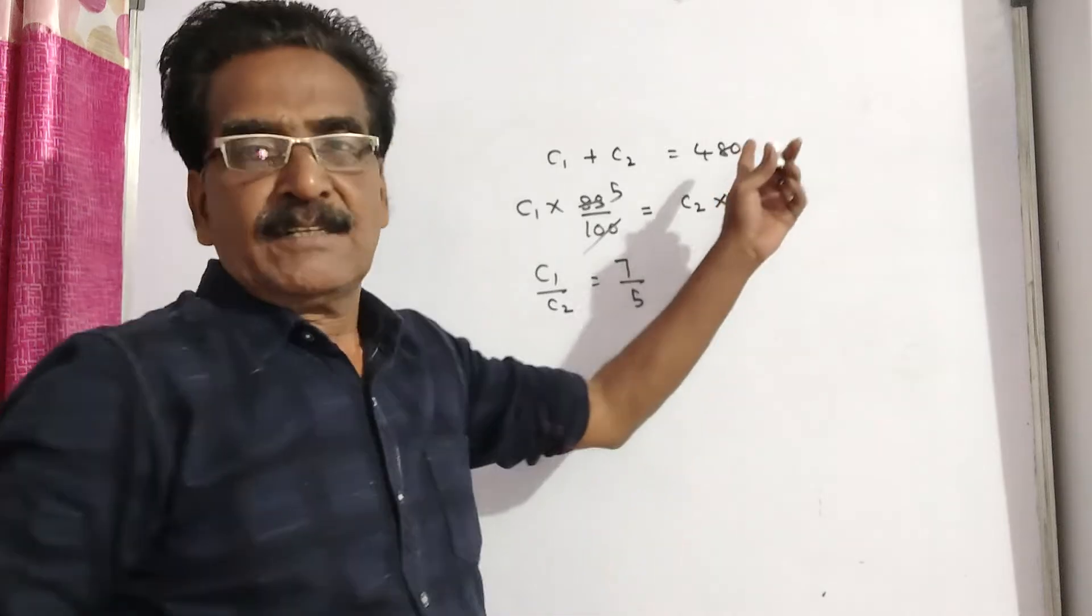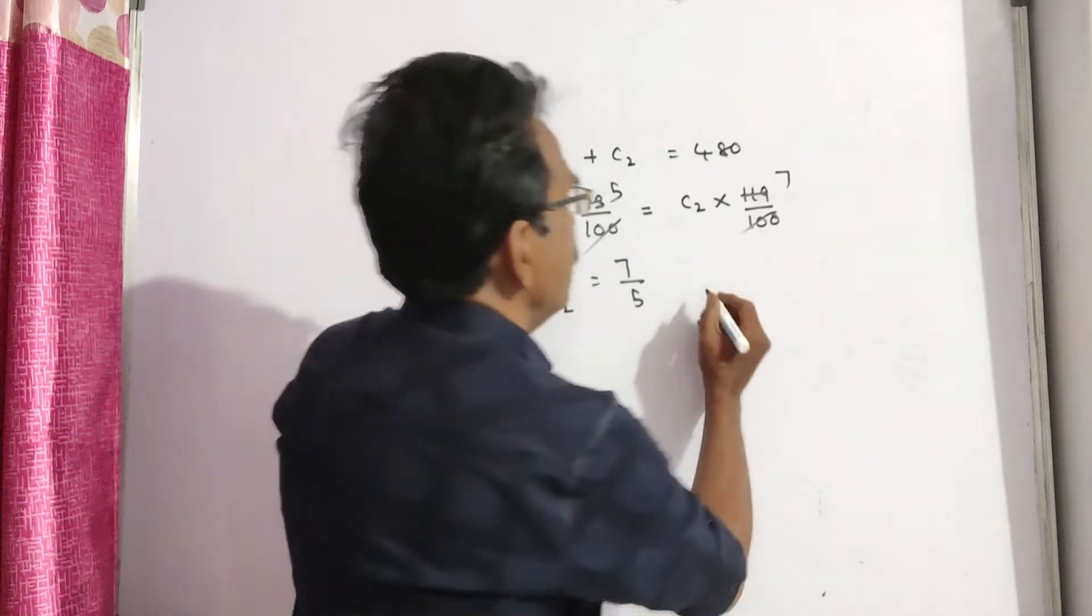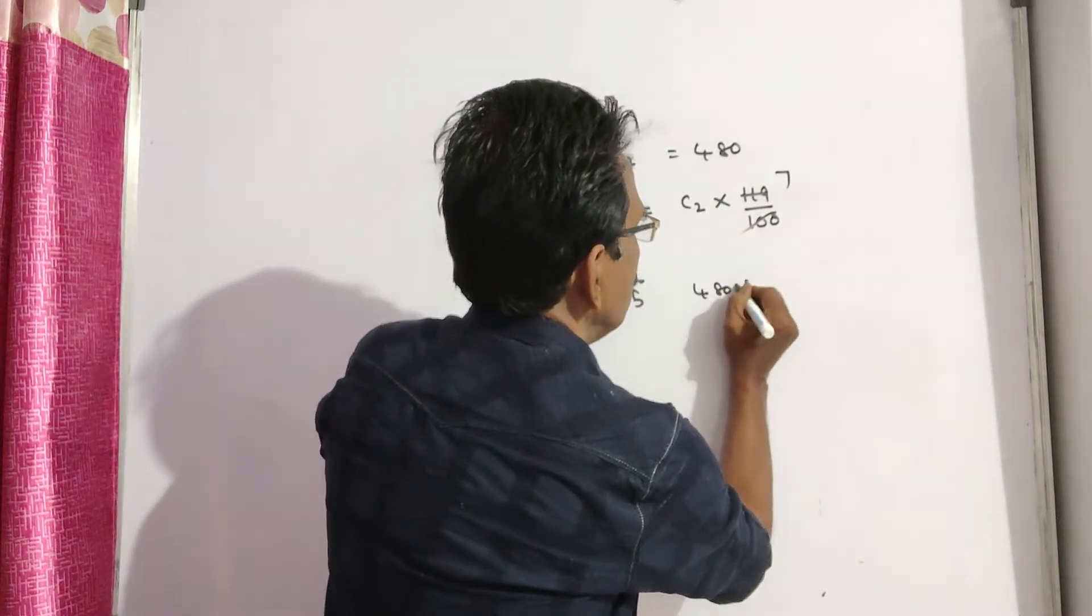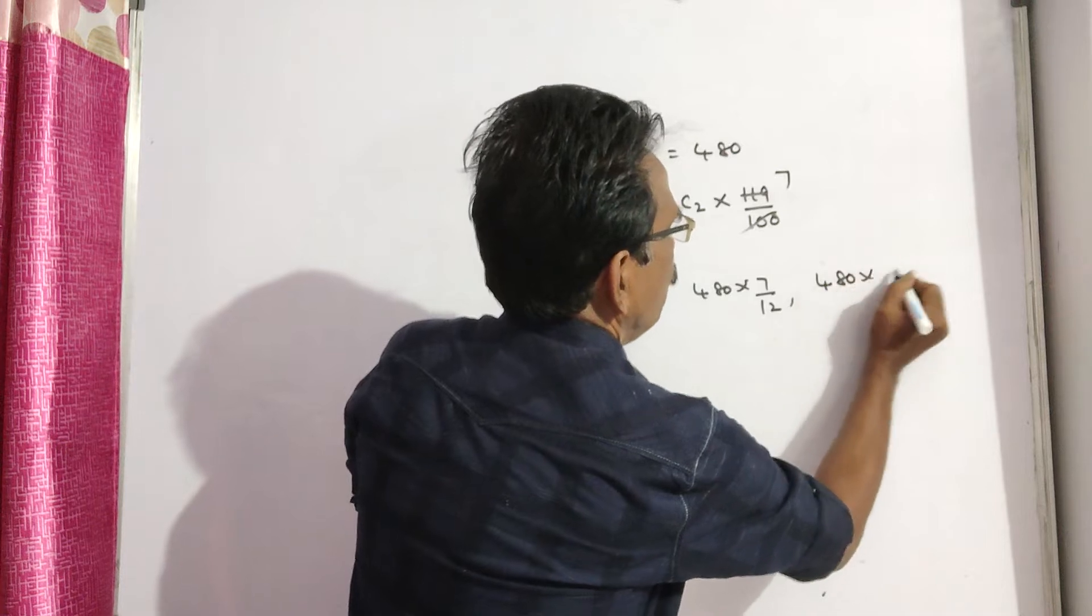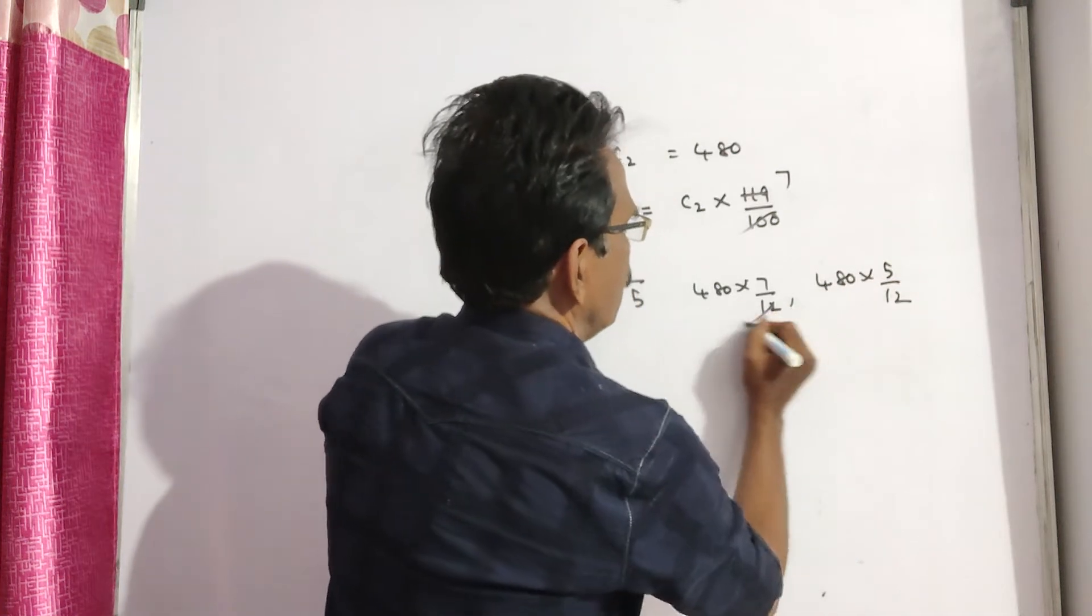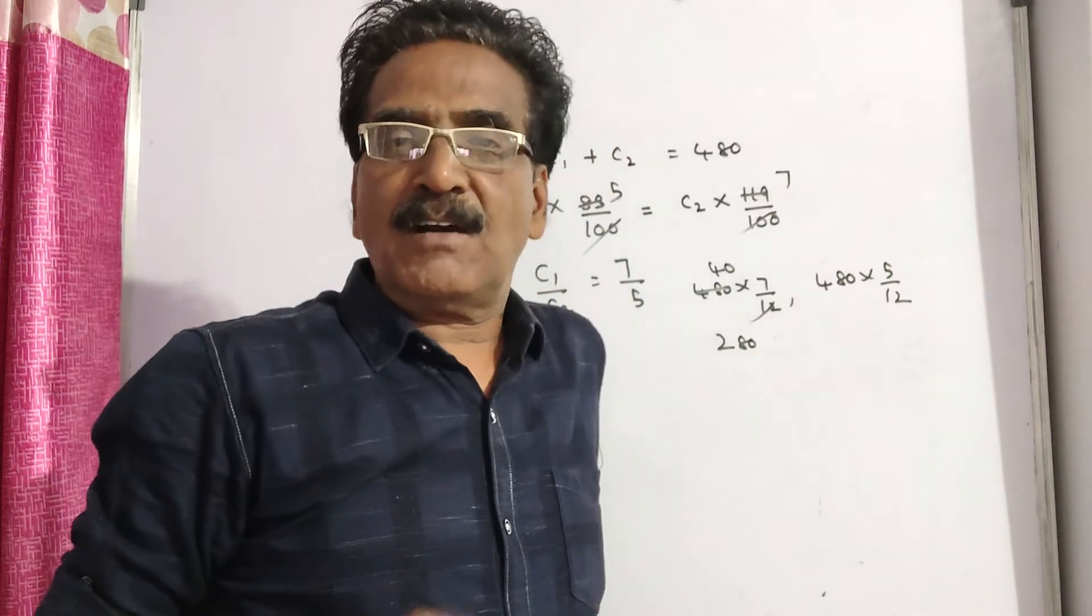Now let us divide 480 in the ratio 7 to 5 to get the cost prices of the two watches. 480 times 7 by 12, 480 times 5 by 12. So 4 times 7 is 280, the cost price of the watch